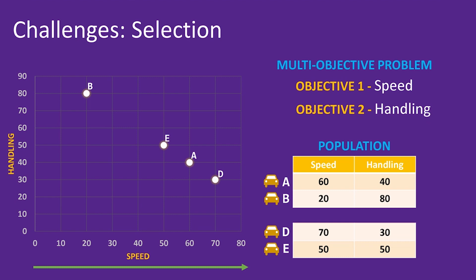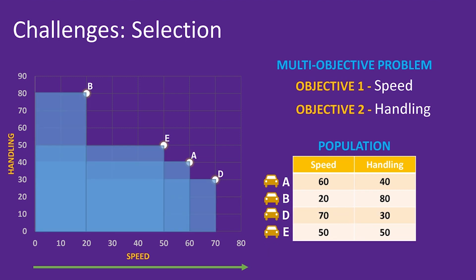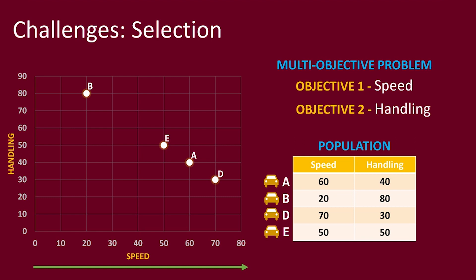This leaves us with four solutions. If we shade in the area of the objective space which all remaining solutions dominate, we can see that no solutions are inside the shaded area. This means that all remaining solutions are non-dominated. So which of these solutions is the best? The answer is we don't know — no solution completely dominates another, so no solution is completely better than another.